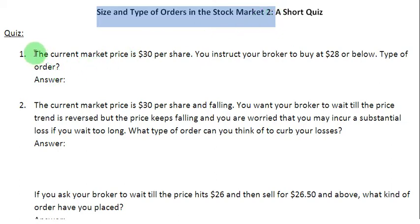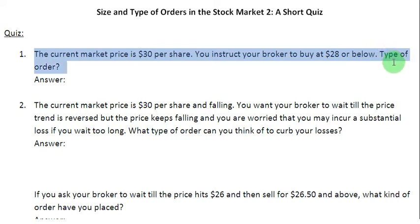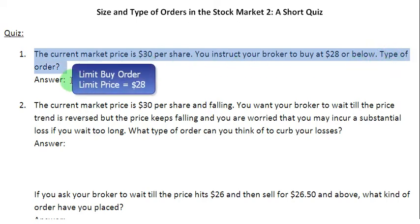So let us deal quickly with a few questions here. The first one is that the current market price is $30 per share and you are instructing your broker to buy some shares for you at a price of $28 or below. We are required to indicate the type of order that we are placing. If you remember the types of orders from the first video, you will immediately come up with the answer: you have placed a limit buy order with your broker, specifying a limit price of $28.